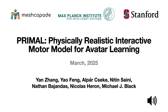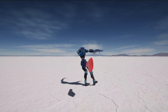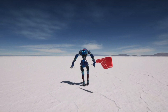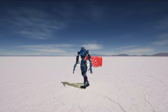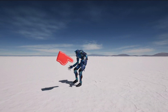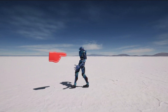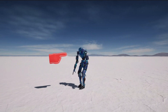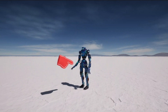We present Primal, a physically realistic and interactive motor model for avatar learning. Primal is a generative model that captures the essential dynamics of human motion. The interactive nature of Primal breathes life into the avatar, making it ideal for applications in gaming, AR-VR, controllable video generation, and interactive agents.